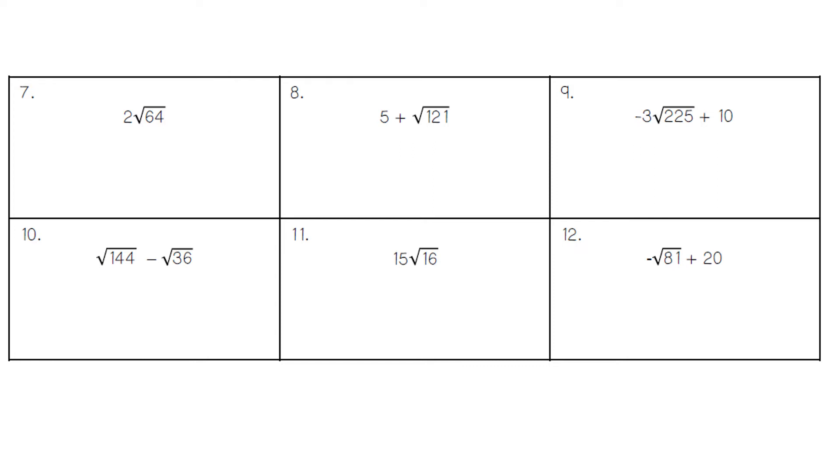Now, for these problems, we have an extra step. This is a two-part or sometimes even a three-part problem. For number seven, we have the two out in front. Eight times eight is 64, so the square root of 64 is eight. When numbers are side by side, it means to multiply. Two times eight gives us 16.